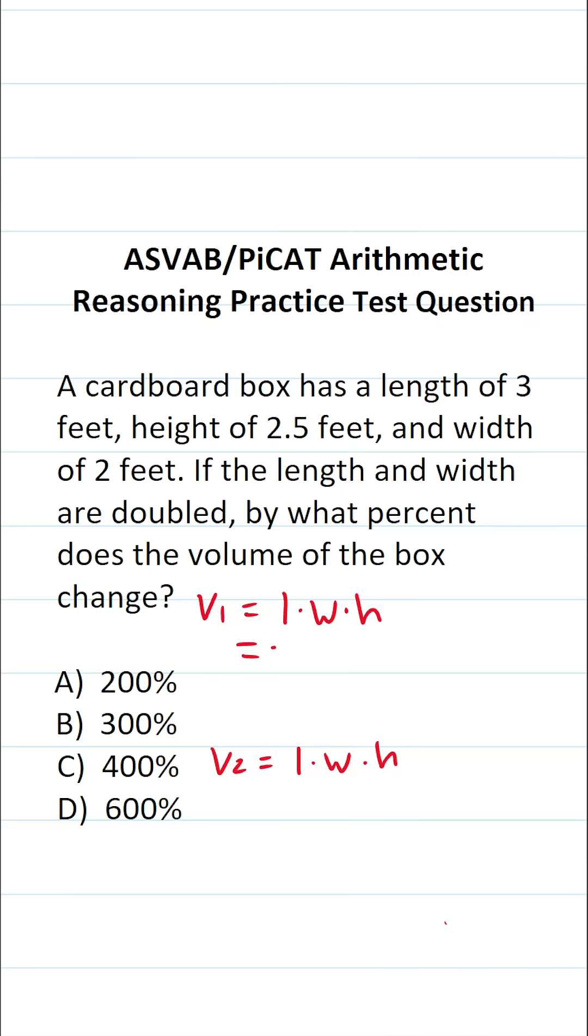What is the length of our box? It's 3 feet. Its width is 2 feet, and its height is 2.5 feet. So let's calculate the volume of this first box. 2 times 2.5 is something you should be able to do mentally. 2.5 plus 2.5 is going to be 5, so 2 times 2.5 is 5. This becomes 3 times 5. 3 times 5 is 15. So the volume of this first box is going to be 15.